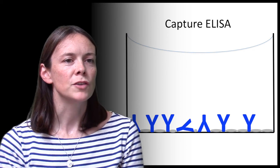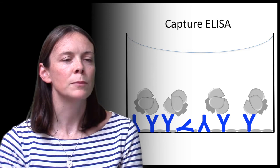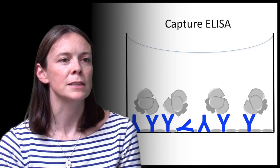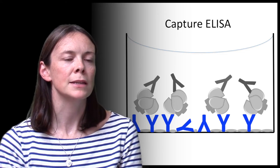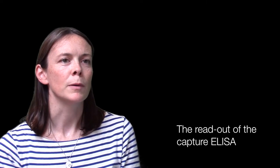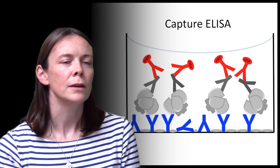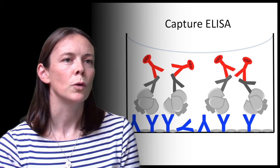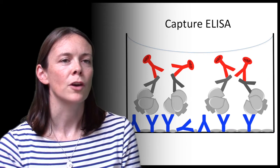The protein of interest is then added which binds to the capture antibody and is held in place while another protein-specific antibody, the detection antibody, is added. This detection antibody is bound by a third antibody which is tagged with an enzyme called horseradish peroxidase or HRP for short.